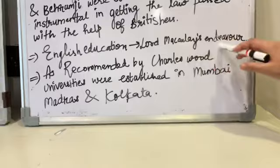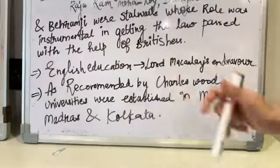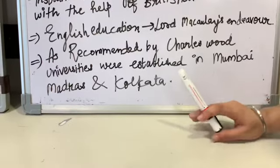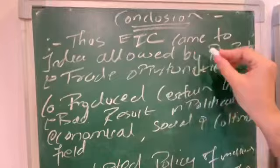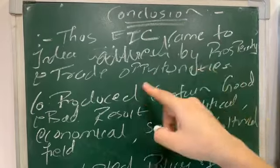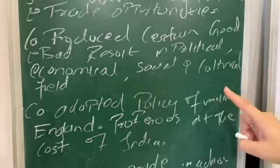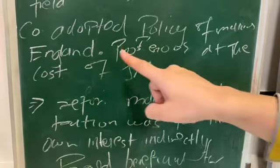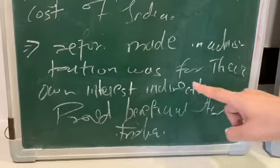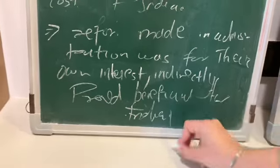Lord Macaulay made efforts to introduce English education in India. As per the recommendation of Charles Wood, universities were established in Mumbai, Madras, and Calcutta. In conclusion, the East India Company came allured by prosperity and trade opportunity, produced certain good and bad results politically, economically, socially, and culturally. The company adopted the policy of making England prosperous at the cost of India. Reforms made in administration were for their own interests but indirectly proved beneficial for India.